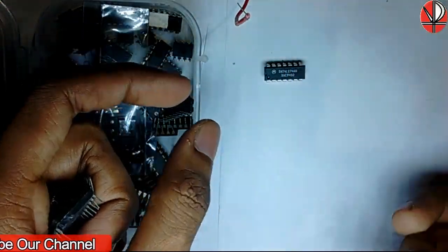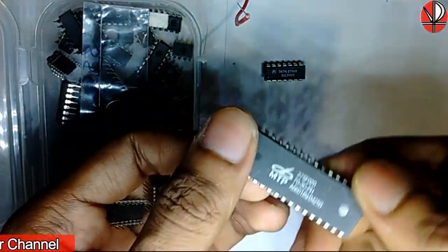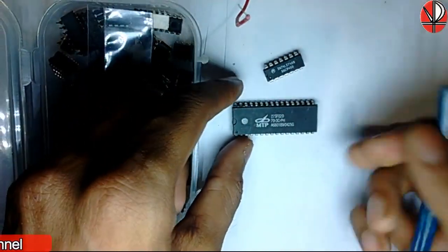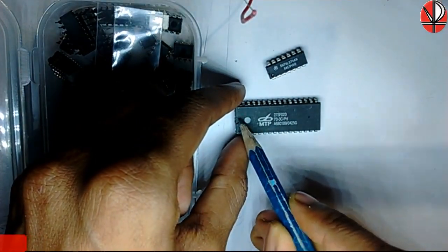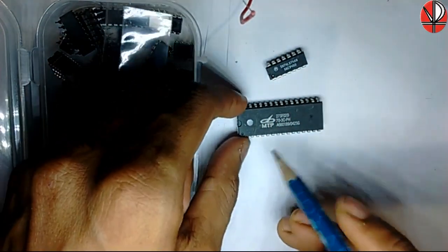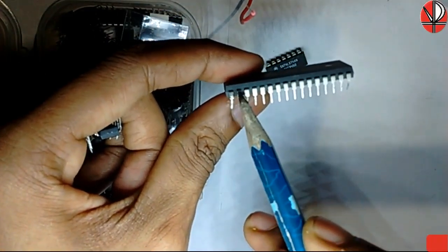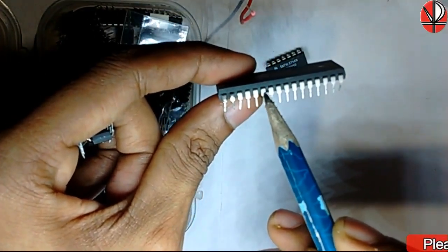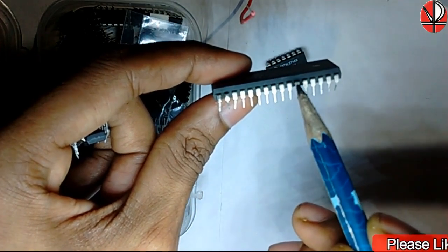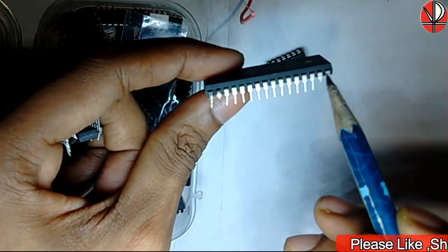So first you keep this IC like this. This notch mark should be towards your left side. And then you count 1, 2, 3, 4, 5, 6, 7, 8, 9, 10, 11, 12, 13, 14, 15, 16.